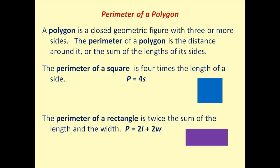A polygon is a closed geometric figure with three or more sides. The perimeter of any polygon is the distance around it, or the sum of the lengths of its sides. When it comes to a perimeter, you don't have to memorize any formula — you can just find the sum of the lengths of all sides. However, we will talk about a couple of more common formulas.